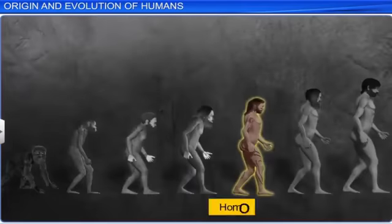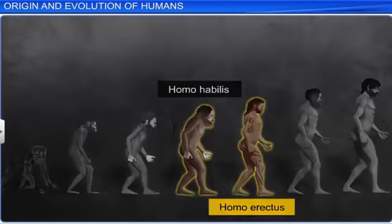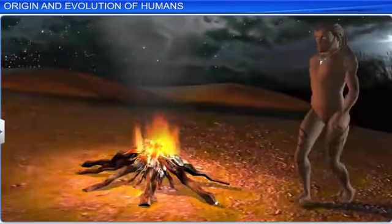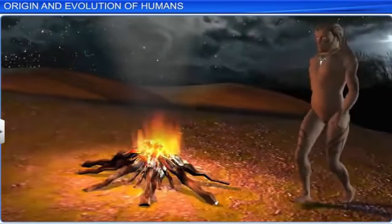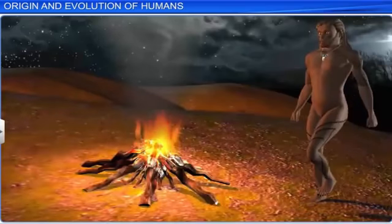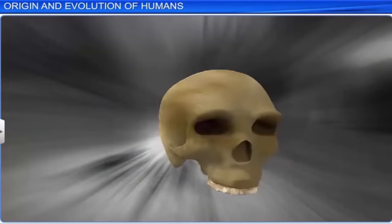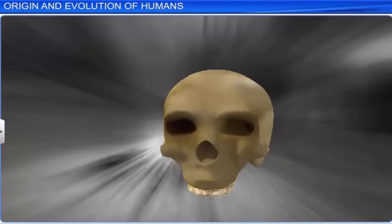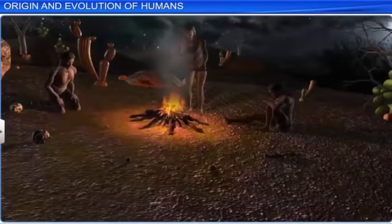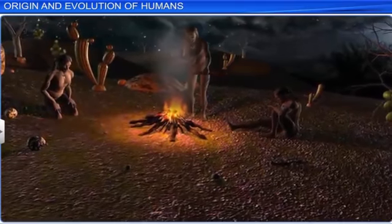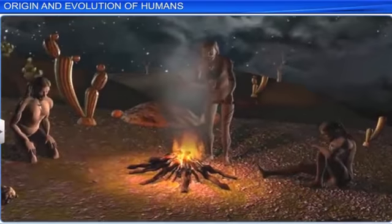The brain of Homo erectus was smaller, around 900 cubic centimeters. While the teeth were larger than that of present day human beings, as they probably ate meat. Homo erectus flourished till about 200,000 years ago, or even later, and then gave way to other species of the human genus.